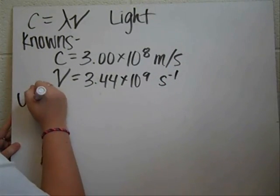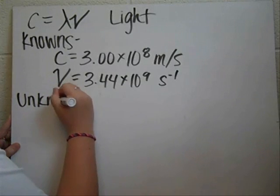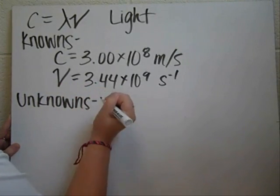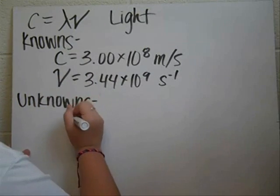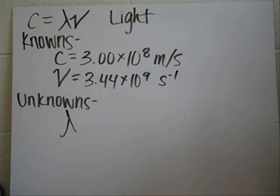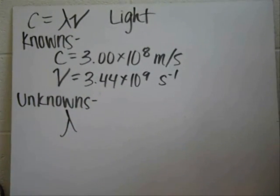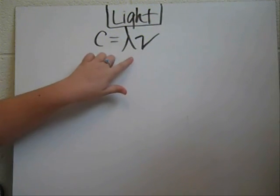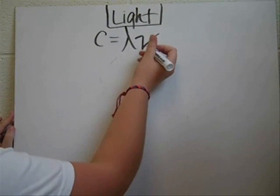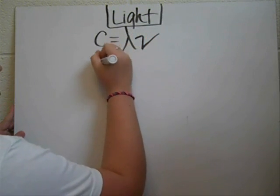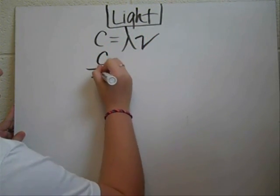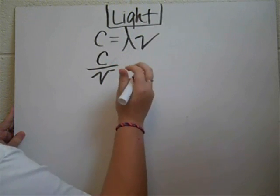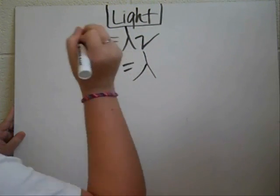And then our unknowns are going to be the wavelength. All right, and the next step is going to be to manipulate this equation. And we want to manipulate it so we can get the wavelength by itself. So in order to do that, we're going to have to divide by frequency. So it'll look like C divided by nu is equal to the wavelength.